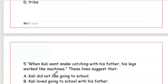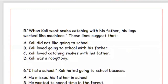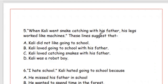Question 4: Which word means the same as 'way' (raasta)? The right answer is Option C, track — track and way mean the same. Question 5: When Kali went snake catching with his father, his legs worked like machines. These lines suggest — Option C is the right answer — Kali loved catching snakes with his father.